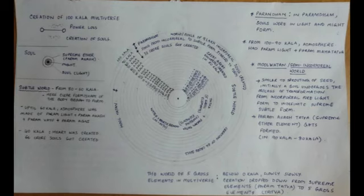How does a soul change its state of being from formless, nirakari, to a supreme subtle form, akari? Similar to initial sprouting of seed. Initially, the soul undergoes the process of transformation from incorporeal pure light form to indefinite subtle supreme form by acquiring an indefinite shape like the roots emerging from the seed in a random manner. This state we can call as the semi-incorporeal form, a transition form.